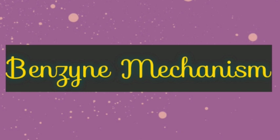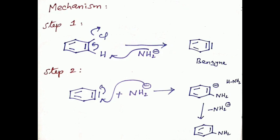For example, with chlorobenzene, the benzyne mechanism is a polar two-step process. In the first step, NH2 minus, which is a nucleophile, approaches the substrate with removal of a proton and removal of Cl minus to form an intermediate — that is benzyne. This intermediate is unstable, highly reactive, and a neutral species.